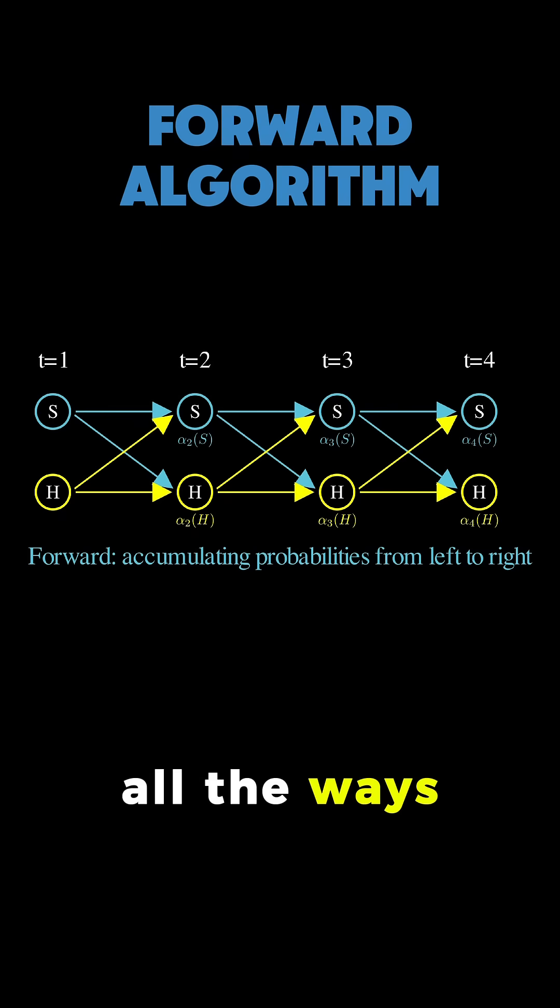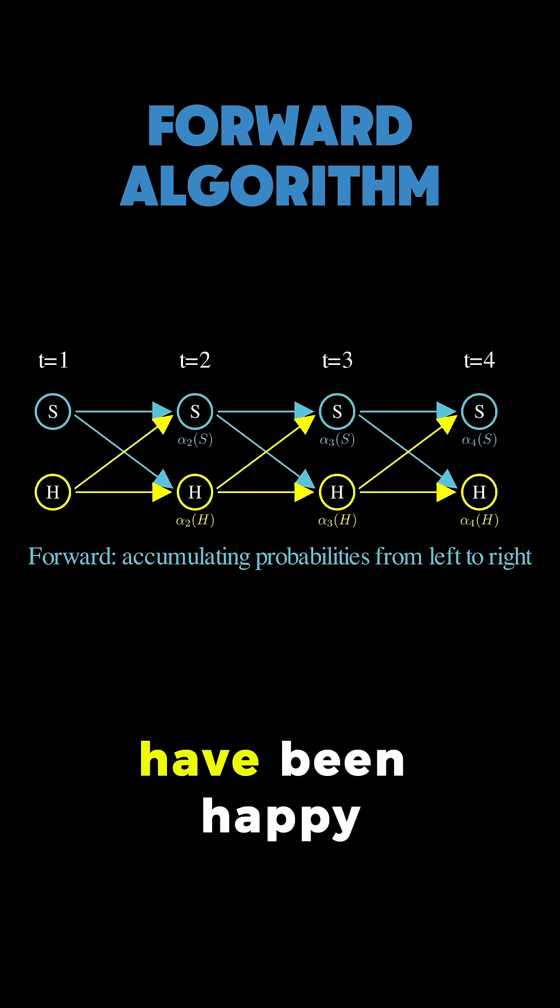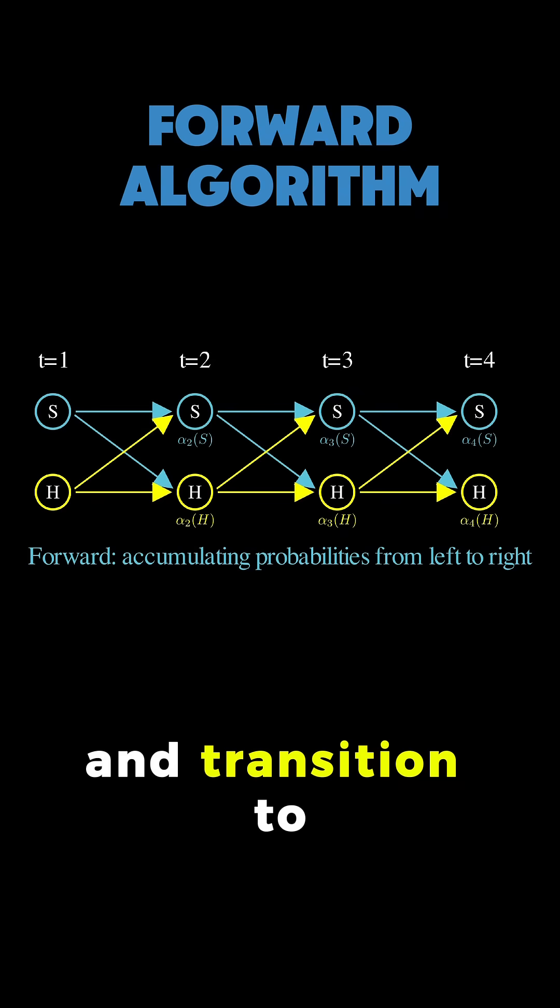We calculate this by taking all the ways we could have gotten to this point. We could have been sad on day 1 and stayed sad, or we could have been happy on day 1 and transitioned to sad.